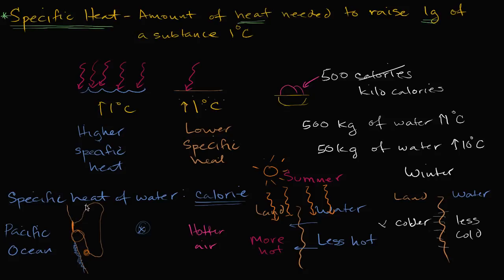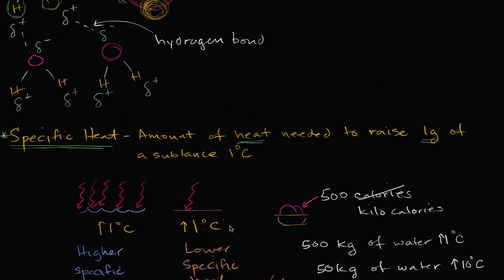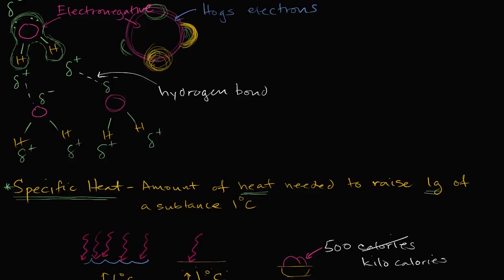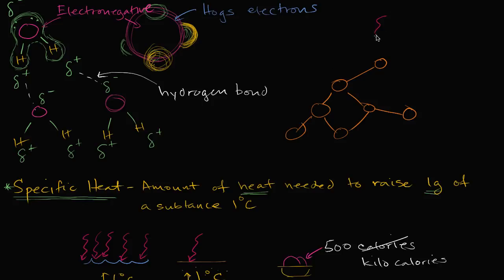You might wonder why water has such a high specific heat — that goes back to the hydrogen bond. For a generic solid substance, as it gets heat energy, that energy just increases the kinetic energy of the particles — it makes them vibrate in place more. That's what temperature is: average kinetic energy. When you touch something hot, those particles are just vibrating super fast.